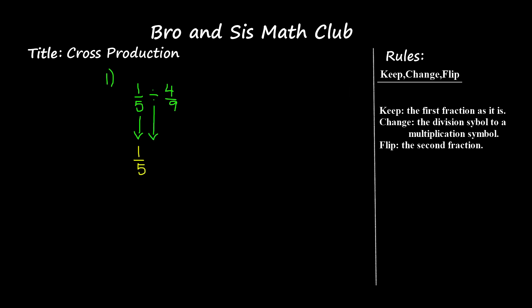So I'm going to take the division symbol and turn it into a multiplication symbol. The final step is to flip the second fraction, so I'm going to take the second fraction and flip it, and it'll turn into nine over four.